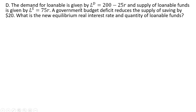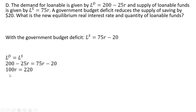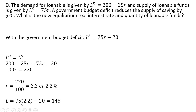In Part D, the demand and supply of loanable funds are the same as before, but the government is running a budget deficit which reduces the supply of saving by $20. We subtract $20 from the supply equation — a reduction in public saving. Setting up the equilibrium condition, adding $20 to both sides, then adding $25 to both sides, this causes the real interest rate to rise and the equilibrium quantity of loanable funds to decrease to $145.